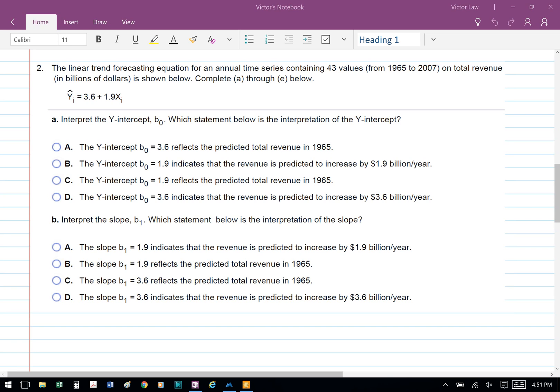Business Stat Chapter 16 Preclass Assignment Tutorial, Question 2. The linear trend forecasting equation for an annual time series containing 43 values from 1965 to 2007 on total revenue in billions of dollars is shown below. Complete parts A through E below.